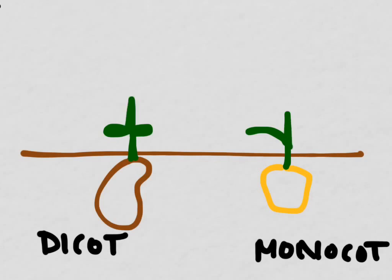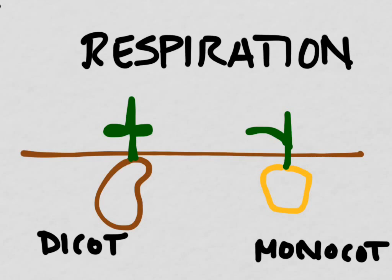The stem would then continue to grow above the initial set of cotyledons, or the single cotyledon in the monocot. All the while, these seedlings are undergoing respiration. They're using the stored energy stored here in their cotyledons in order to power their growth.